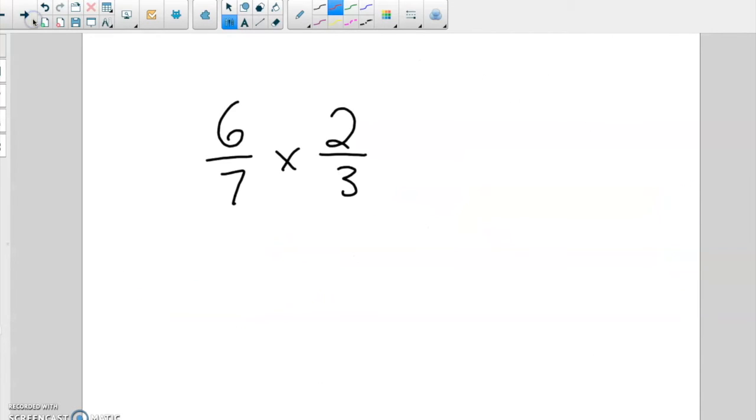So, this one. Before I multiply straight across, I'm going to check. Can I simplify before I multiply? I'll check the seven and the two. One's on top, one's on the bottom. Two goes into two, but two doesn't go into seven. So I can't simplify those two. Check the six and the three diagonals here. Yes. Three goes into three. So I can divide by three. How many threes fit into three? Three divided by three is one. I'll do the same to the top here. Six divided by three is two. And now I'm in simplest form. Now I can just multiply straight across. Two times two is four. Seven times one is seven. Four sevenths is my answer, and it's already in simplest form.